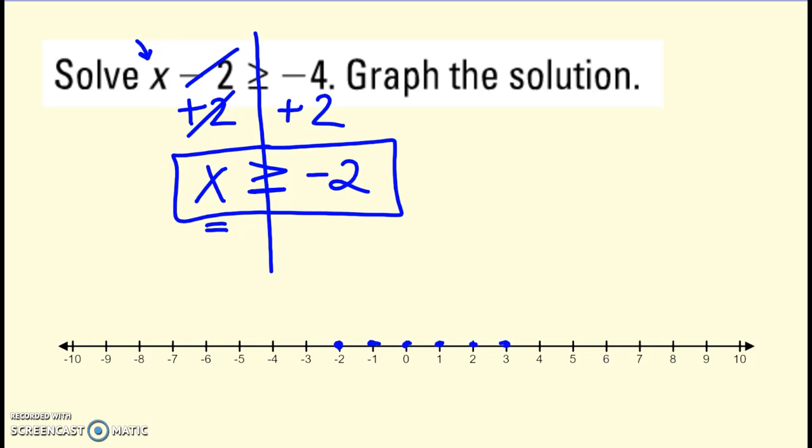So since it's equal to, less than or equal to, I include negative 2 and everything this way would be a solution. You can draw your arrow on the line or usually it's a little easier to draw it just above so you can see it better.